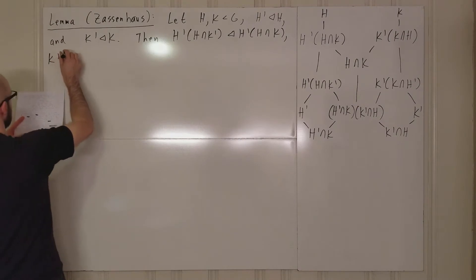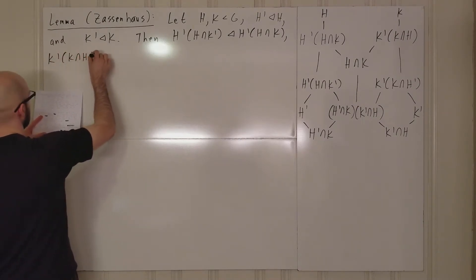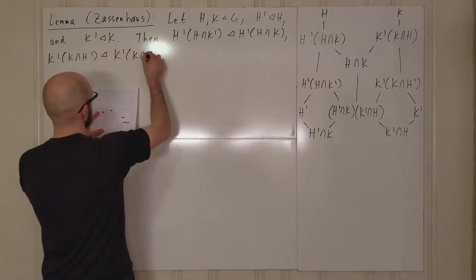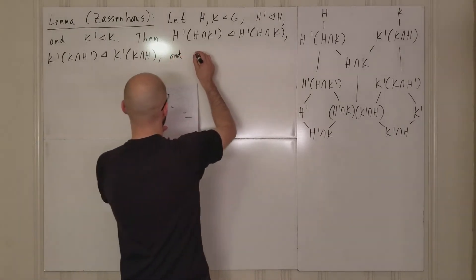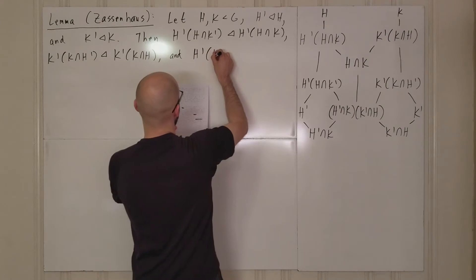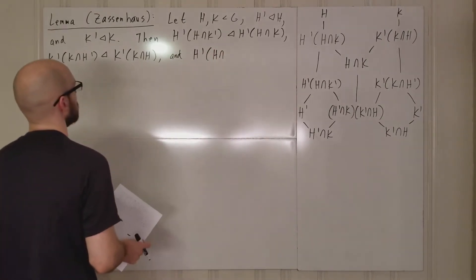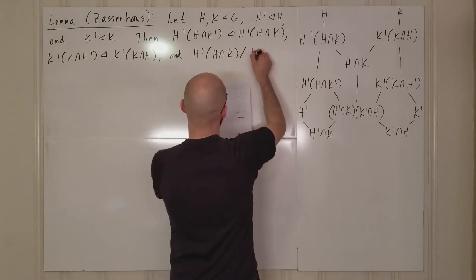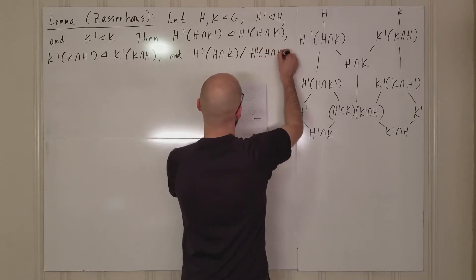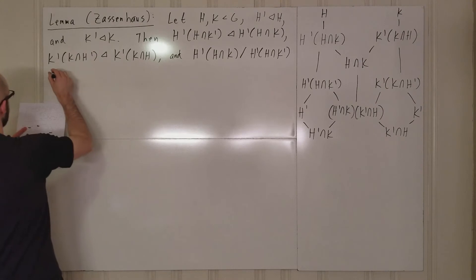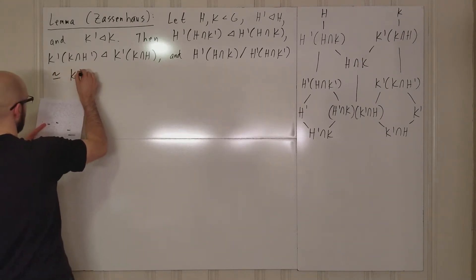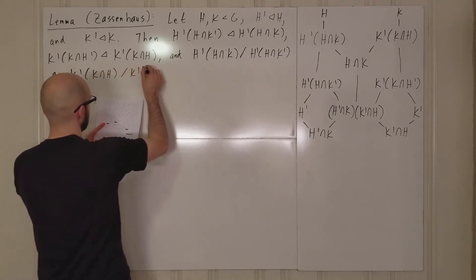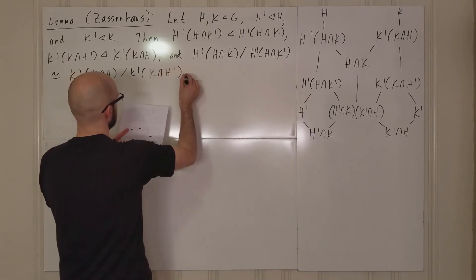k prime times (k intersect h prime) is normal in k prime times (k intersect h), and h prime times (h intersect k prime) is isomorphic to k prime times (k intersect h) mod k prime times (k intersect h prime).